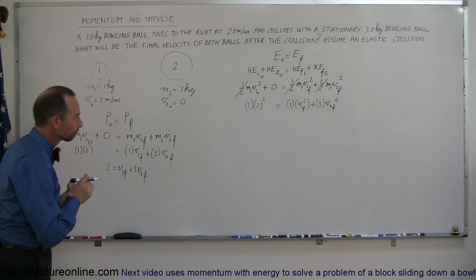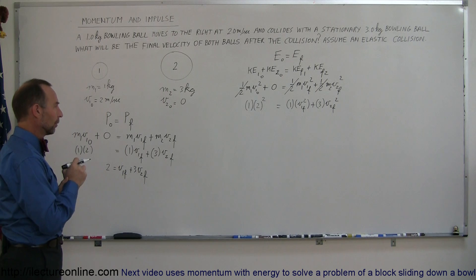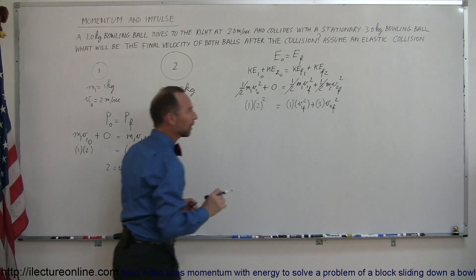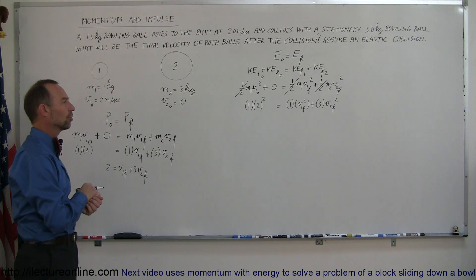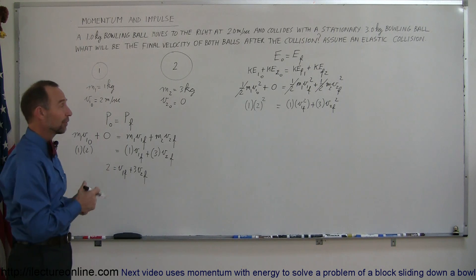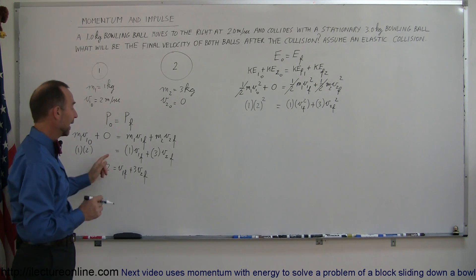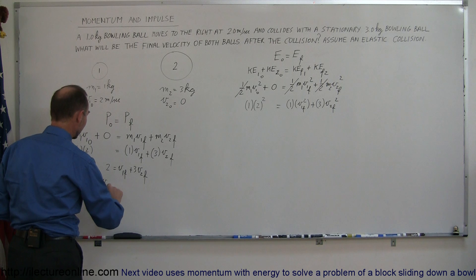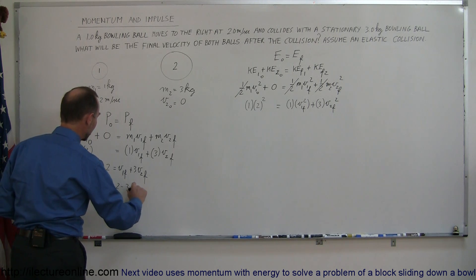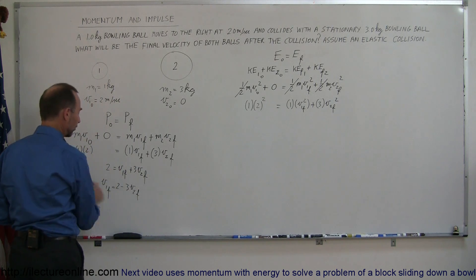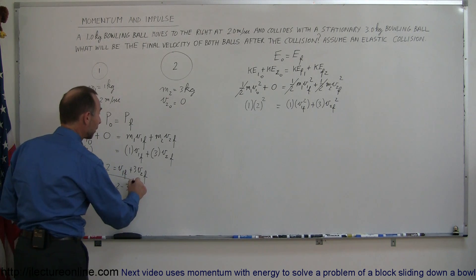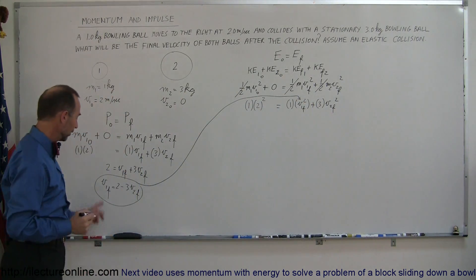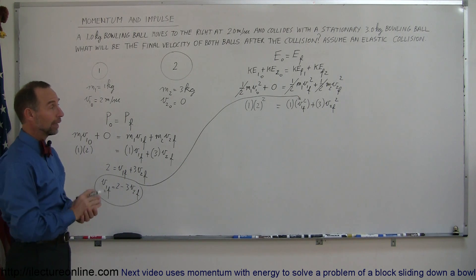We have two equations and two unknowns: v1 final and v2 final. It's easiest to solve the momentum equation for v1 final and plug that into the energy equation, eliminating one variable. So v1 final equals 2 minus 3·v2 final. We then replace v1 final in the energy equation with this expression in terms of v2 final.